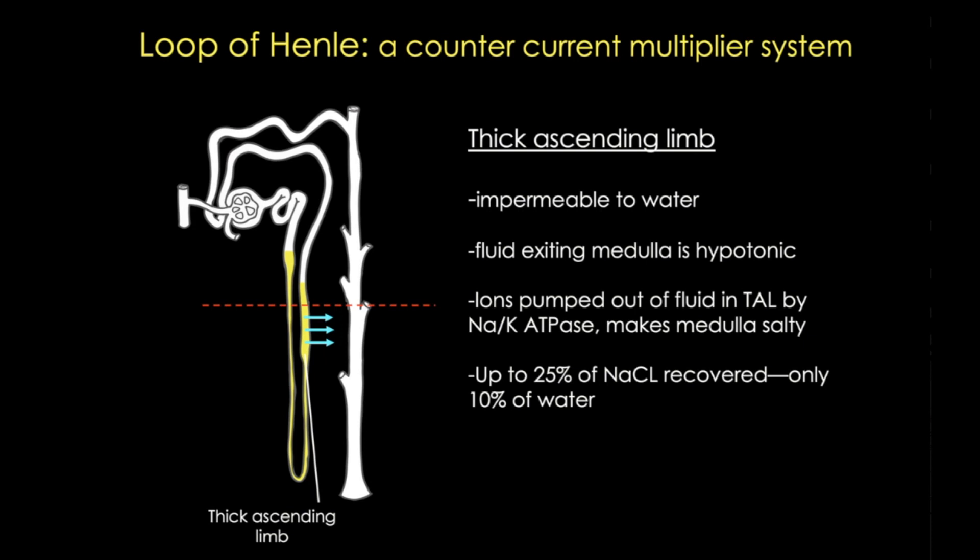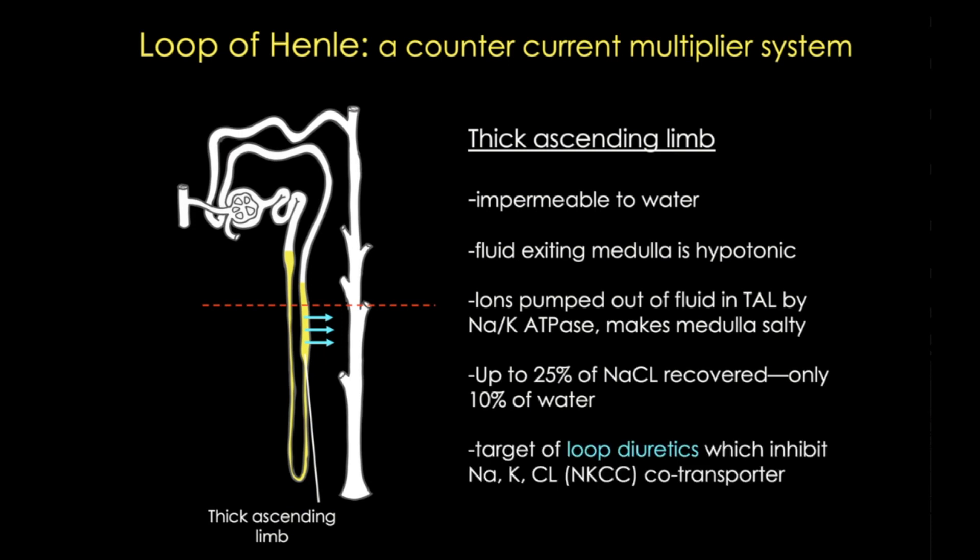If you need to understand this process better, there are great videos on YouTube that describe it well. The thick ascending limb is also a major target of loop diuretics, which inhibit the sodium-potassium-chloride co-transporter in the thick ascending limb cells.